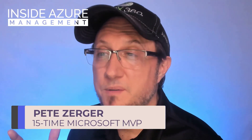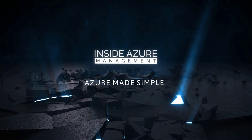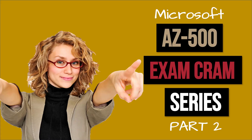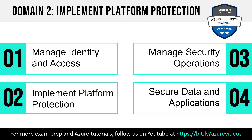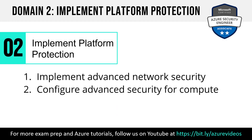Hello, my friends. Welcome back to part two of this four-part Microsoft AZ-500 exam cram series. I have more great material prepared for you today, so let's get right to it. We are on part two of the AZ-500 exam cram series, and this is for domain two, which is implement platform protection, consisting of two sub-domains: advanced network security and advanced security for compute.